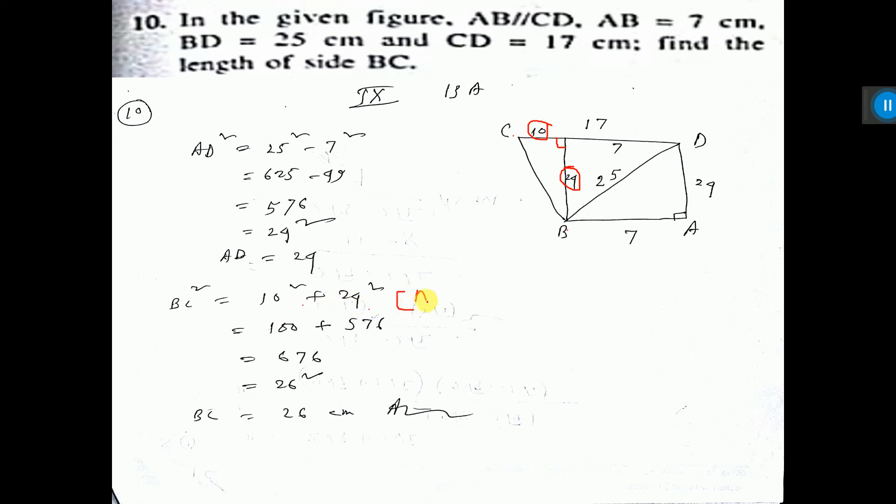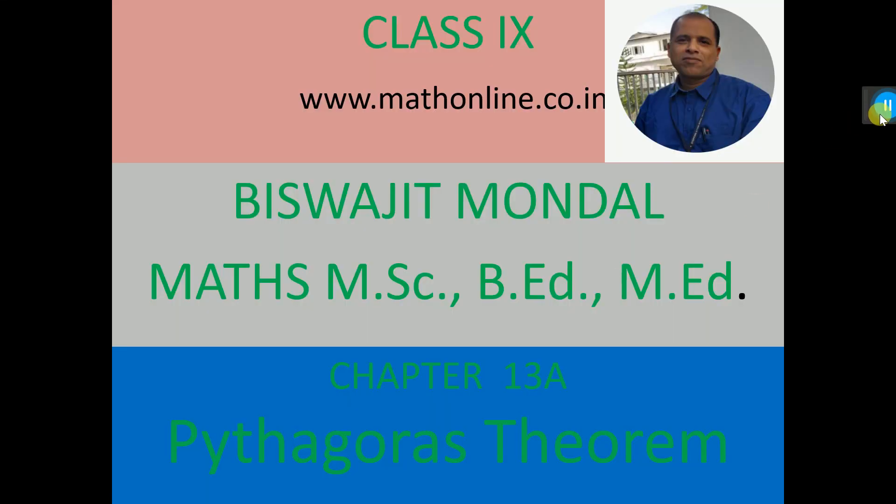Here you write: applying Pythagoras theorem from which triangle? Triangle CBK. So you are getting 26. That is from 12 to 5, 13. So BC equals 26 cm.